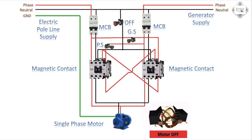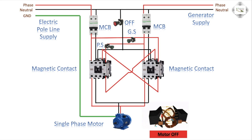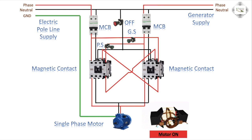Standard motor operation: off — PS push on, motor on; or off button — motor off; GS switch on — motor on; or off switch off — motor off. This means two lines supply one load, the control automatic system. Thank you.